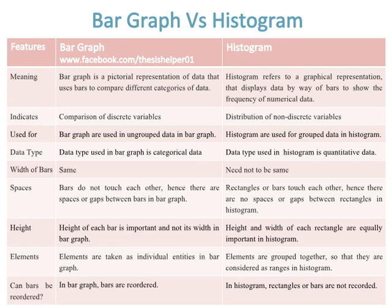Bars do not touch each other; hence there are spaces or gaps between bars in a bar graph, while rectangles or bars touch each other. Hence there are no spaces or gaps between rectangles in histogram. Height of each bar is important and not its width in bar graph, while height and width of each rectangle are equally important in histogram.